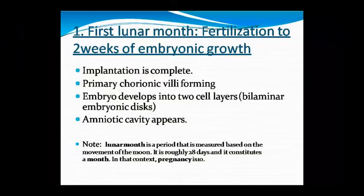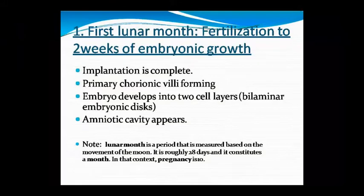In the first lunar month, the amniotic cavity begins to appear, implantation occurs, and chorionic villi develop as a two-cell layer. A lunar month is the unit we use for measuring developmental stages, based on the moon's cycle. It is important because many developmental and physiological changes in females, including the menstrual cycle, depend on it. One lunar month is roughly 28 days, equivalent to one menstrual cycle.